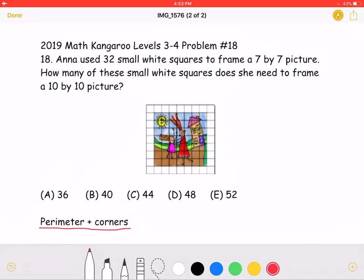In the example, a 7x7 picture, we need to add the perimeter, which is 7 plus 7 plus 7 plus 7, 4 times 7, which equals 28 for these four sides, each of length 7, and then add the corners. It's four corners since it is a square. So in total, we will have 32 squares, as shown in the problem.